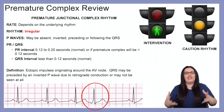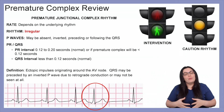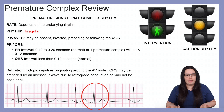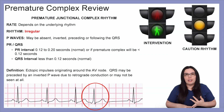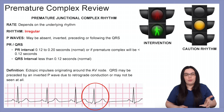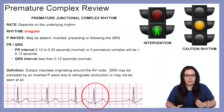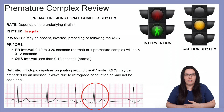Next, we're going to move on to premature junctional complex rhythms. The rate is really dependent on what the underlying rhythm is. The rhythm is irregular because this is a premature complex, and P waves — just like with junctional rhythms — are either absent, inverted, preceding, or following the QRS. The PR interval normally will be 0.12 to 0.2 seconds, but if a premature complex is present then it will be less than 0.12 seconds, and the QRS itself will still be normal at less than 0.12 seconds.